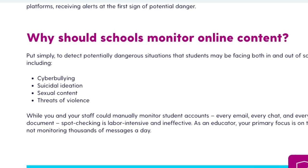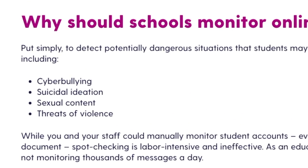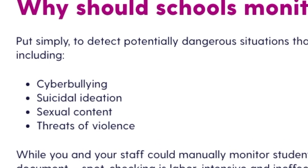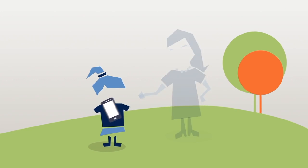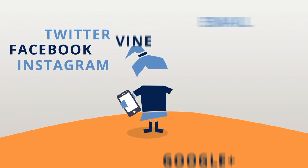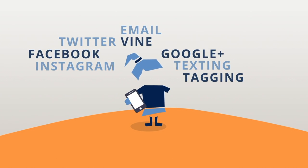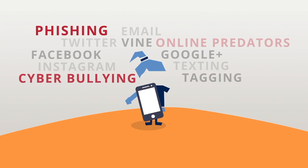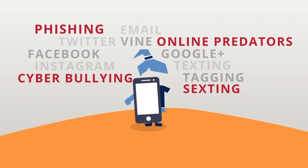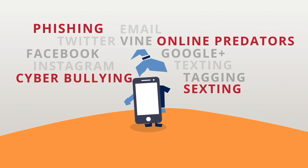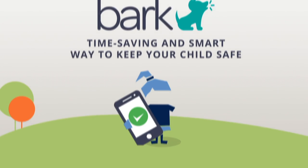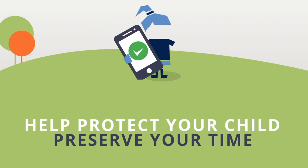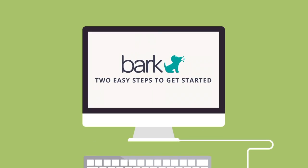Bark alerts administration if it detects threats of violence, profanity, or drug and alcohol related content. Bark also offers a paid subscription to parents which monitors even more at home, including text messages and social media. Rather than picking up your child's device every day and going through texts and social media posts, you can save lots of time and headache with the Bark subscription.